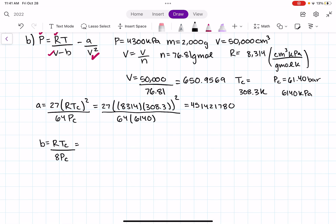And then we continue solving for B. For B, it's going to be my R value, which is 8,314 times our critical temperature, divided by 8 times critical pressure. 61,40. And remember, we're going to use the kilopascal value, not the bar value. And after plugging all of that into our calculator, we get the number 52.1825.